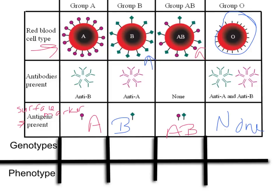Our body produces antibodies for whichever surface marker we do not have. Antibodies help destroy foreign invaders. A person with type A blood has A surface markers, so they produce B antibodies to recognize the B antigen as a foreign invader. The shape of the B antibody is different from the A surface marker, so those B antibodies will not attack the person's own cells. Someone with type B blood makes A antibodies, and those A antibodies go and attack A surface receptors.